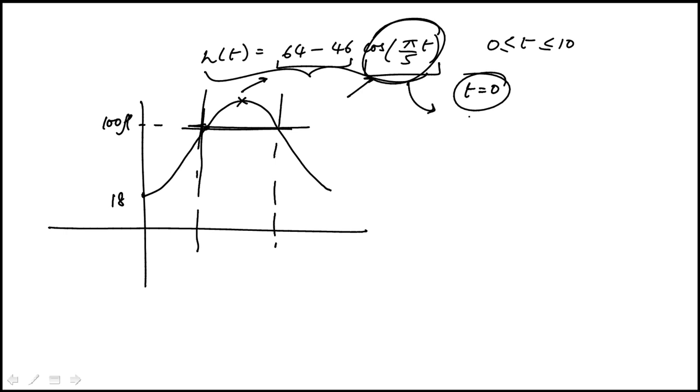Now the maximum height would be when the cosine pi over 5 t is equal to minus 1. In that case, the height would be 110. So that's the maximum height that happens here.